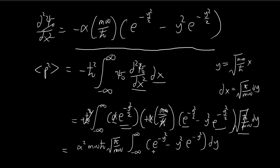If you recall, we actually solved these integrals in the last video. The integral from negative infinity to infinity of e to the power of negative y-squared is just equal to the square root of pi. And if you stick a y-squared in front of the exponential term, it just becomes the square root of pi over 2.